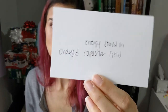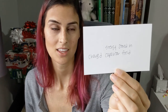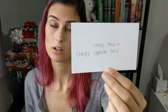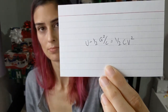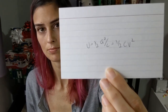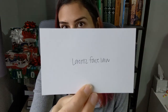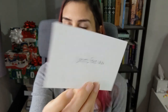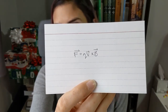The energy stored in a charged capacitor: U equals one half Q squared over C, or alternatively one half CV squared. The Lorentz force law: F equals Q times v cross B, where v is the velocity.